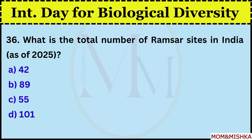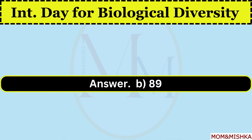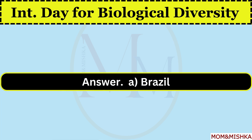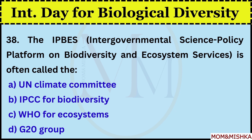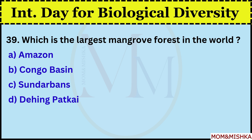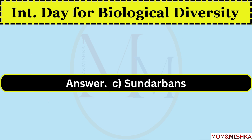What is the total number of Ramsar sites in India as of 2025? 89, option B. Which country has the highest recorded species biodiversity? Brazil, option A. The IPBES — Intergovernmental Science Policy Platform on Biodiversity and Ecosystem Services — is often called the IPCC for Biodiversity, option B. It stands for Intergovernmental Panel on Climate Change. Which is the largest mangrove forest in the world? Sundarbans, option C.